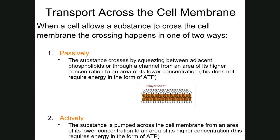With this first slide, I want to identify some terms and give you some definitions, and then we'll work to establish a better understanding of how transport across the cell actually occurs. The first way cells can allow something to cross the membrane is what's known as passively. Passively means the substance crosses the cell membrane by squeezing between adjacent phospholipids or through a channel.